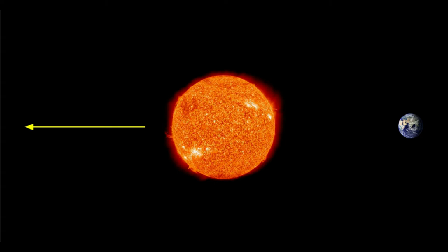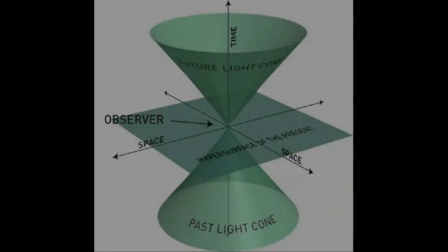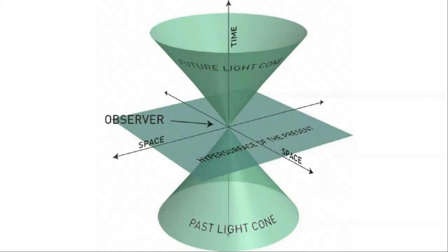Absent the existence of a mirror in the right place at the right time to reflect it back, this photon will remain forever beyond our light cone and therefore inaccessible to us. Nonetheless, the existence of this photon is a prediction that follows from an established theory.